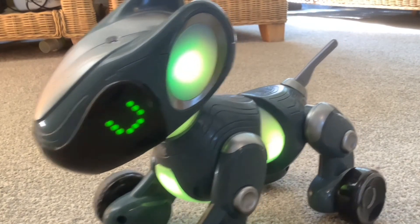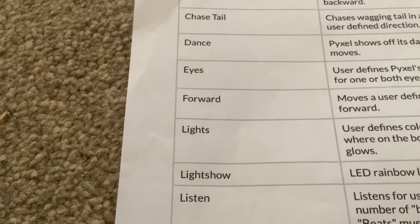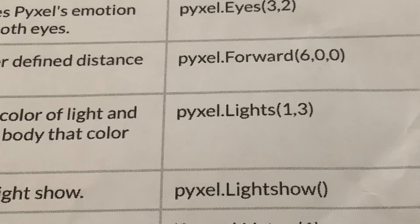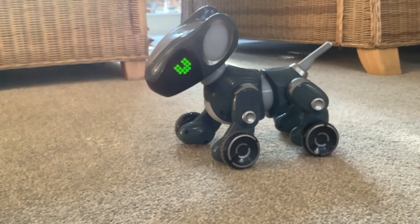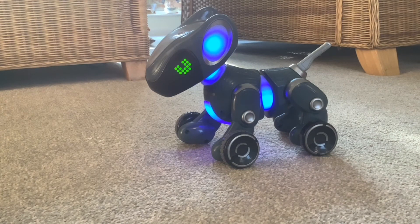I'd like to measure that with a tape measure and see if it really is six inches — we'll do that in the future to see how accurate it is. The next command is lights — user defines the color of light and where on the body that color glows. The Python code example is 'pixel.lights(1, 3)': three refers to which lights, and three is all lights; one is the color, which I believe is blue. That's button six. Blue, and it's all lights. It'll stay on permanently because there's nothing in the code to switch it off.